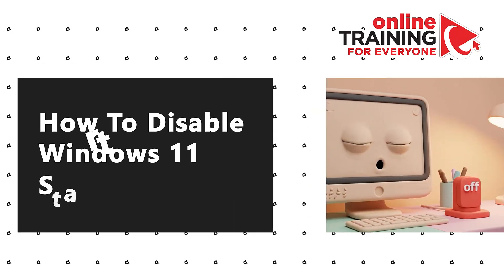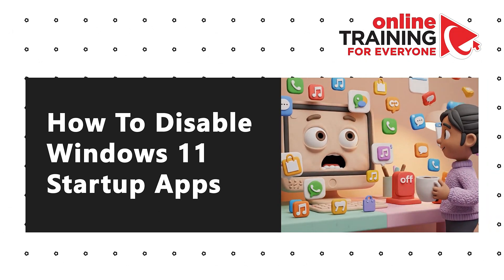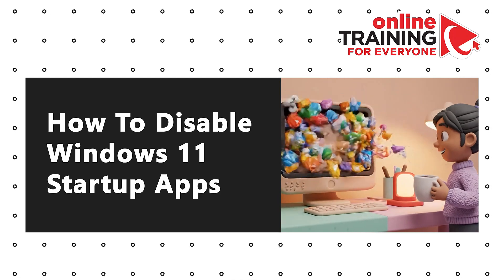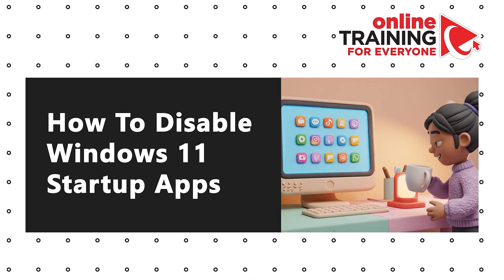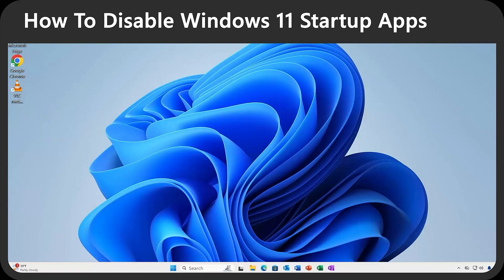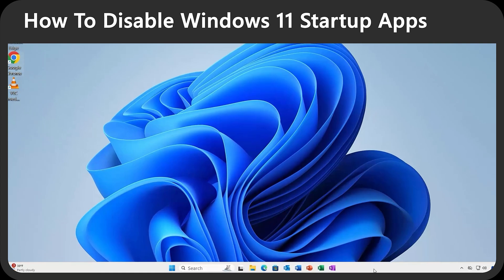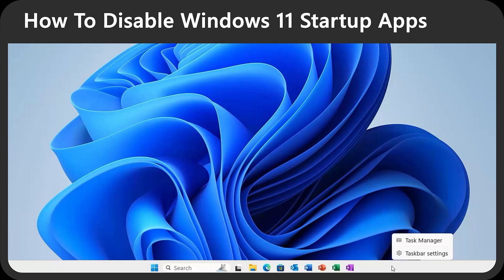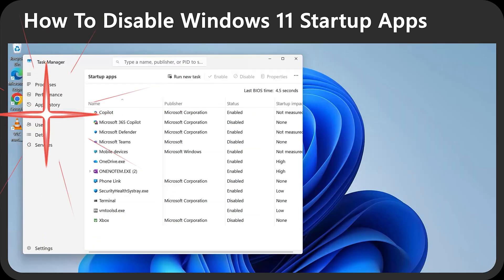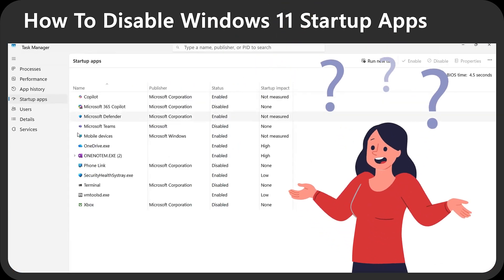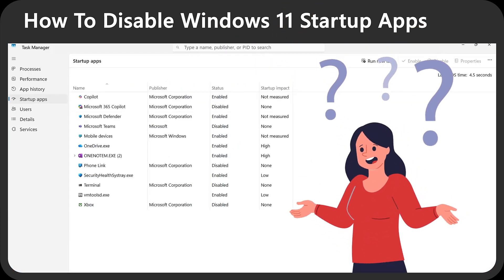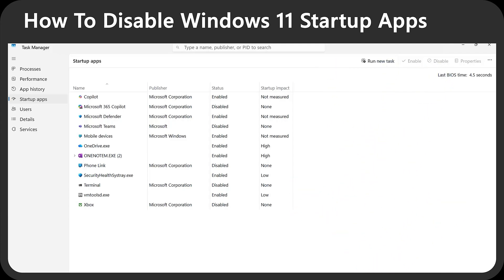Next, let me share how to disable Windows 11 startup apps to stop unneeded apps from auto-starting and slowing your day. To start disabling apps, open Task Manager and select Startup Apps. Right-click on the taskbar and select Task Manager. On the left, select Startup Apps and expand the window.